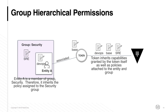When working with Vault entities and groups, it's important to understand how policy permissions are hierarchical and therefore inherited. In the example shown here, the token has the base policy attached. The holder of this token happened to be a member of entity A, and entity A happened to be a member of the security group. Therefore, in this scenario, the token carries the capabilities granted by the base, DevOps, and SRE policies.